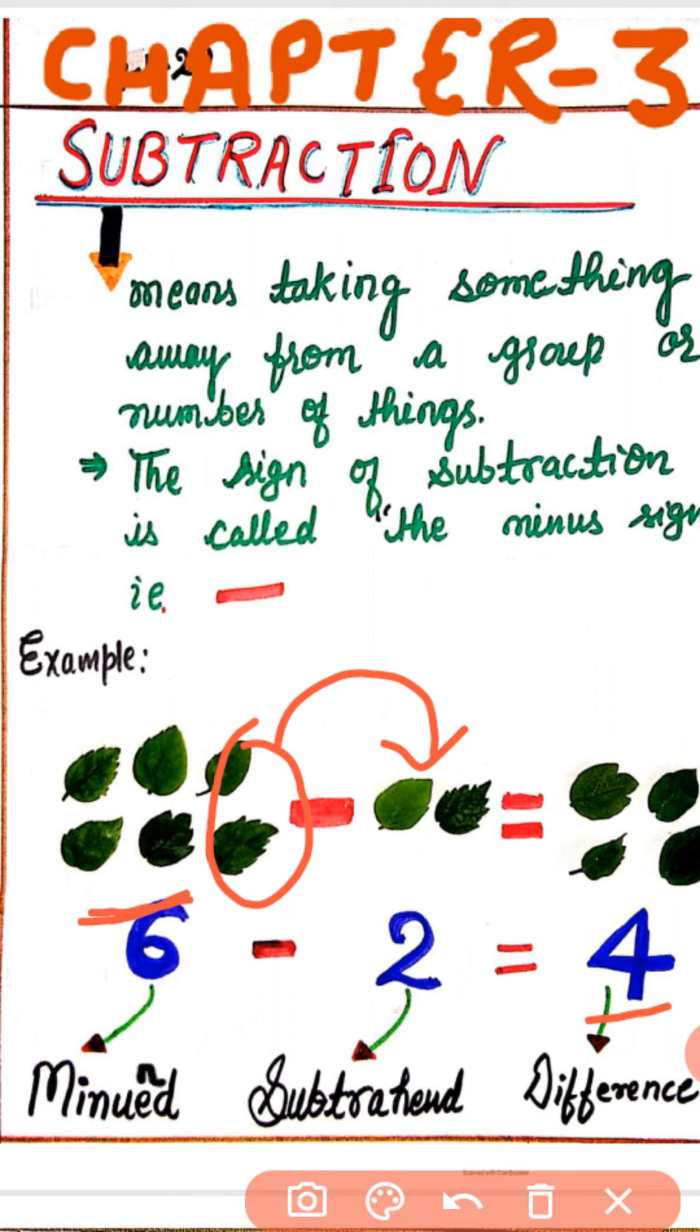6 minus 2 equals 4. Here, 6 is the minuend, 2 is the subtrahend, and 4 is the difference.